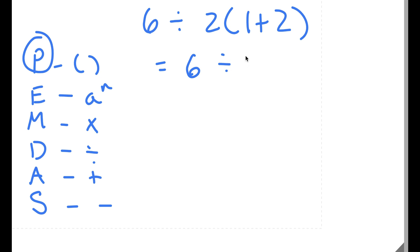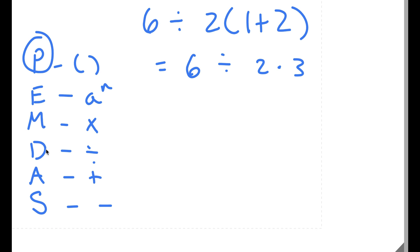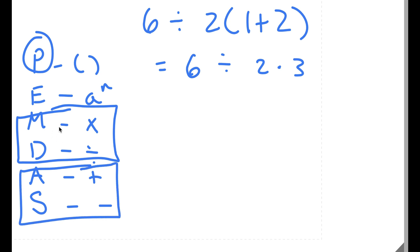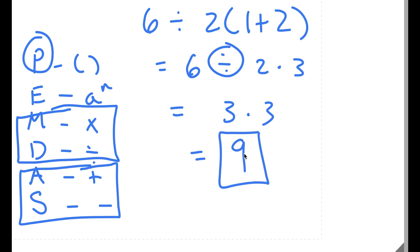So now I have 6 divided by 2 times 3. There are no more parentheses or exponents, so we move to multiplication and division. For multiplication and division, these are in the same tier — same goes for addition and subtraction — so whichever comes first left to right, we do that first. Going left to right, division comes first, so 6 divided by 2 equals 3. Now I have 3 times 3, and 3 times 3 is 9. So 9 is our answer.